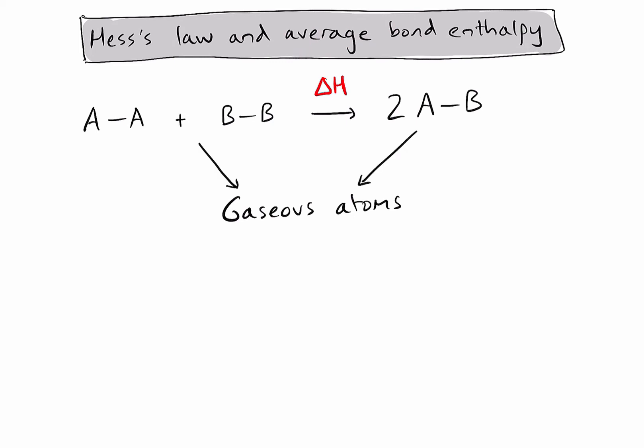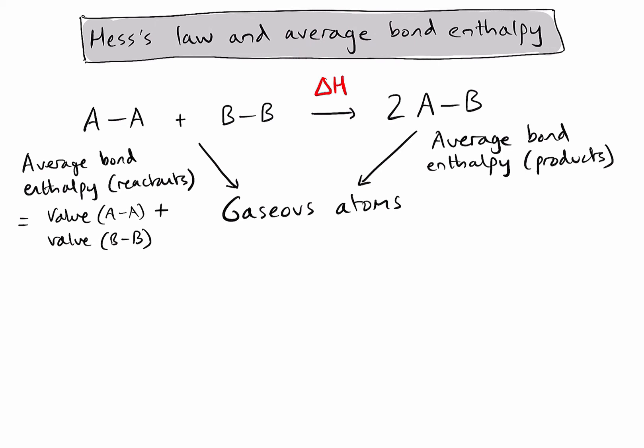To find the total average bond enthalpy required to break all of my reactants apart, I will need to add the value for an A to A single bond and the value for a B to B single bond. And to find the total average bond enthalpy of my products, I would need to find the value for an A to B single bond and multiply it by 2 because I'm forming two of those molecules in my products.